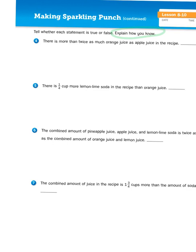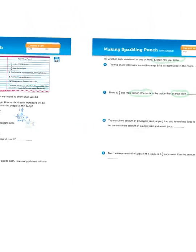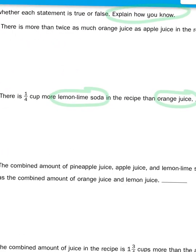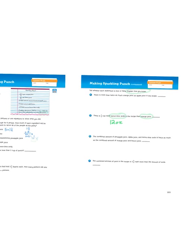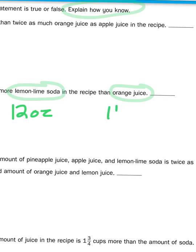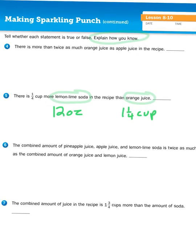So, let's look at question number 5. There is one-fourth cup more lemon-lime soda in the recipe than orange juice. So, what I need to do is look at two ingredients, the lemon-lime soda and the orange juice, and I'm going to compare. So, to go back to the recipe, lemon-lime soda, they're calling for 12 fluid ounces. And orange juice, they're calling for 1 and 1-fourth cup. Now, here's where it gets a little tricky. We have two different units of measurement for liquid here, ounces and cups.